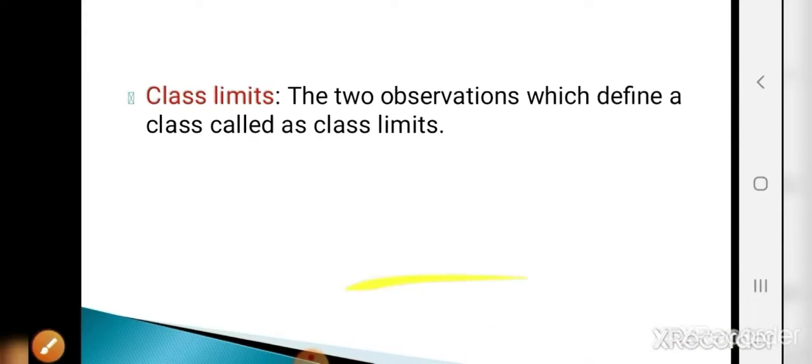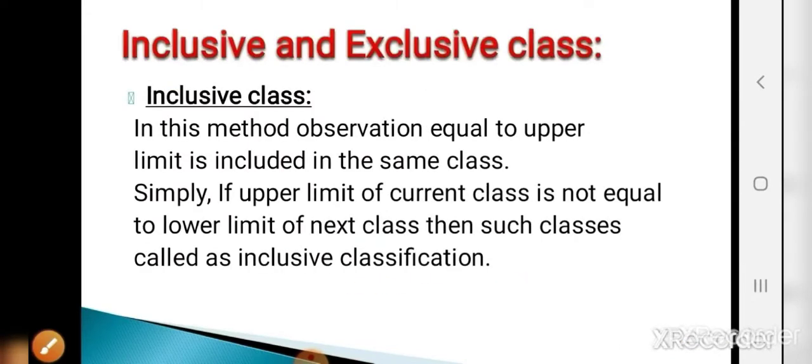Now the next is inclusive and exclusive classification. In the inclusive method, an observation equal to the upper limit is included in the same class. Simply, if the upper limit of the current class is not equal to the lower limit of the next class, then such classes are called inclusive classes.